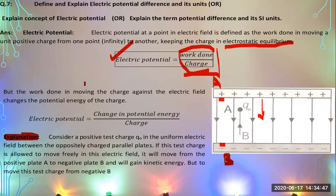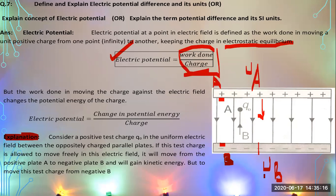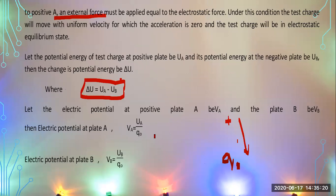Let the potential energy at the positive plate be U_A and at the negative plate be U_B. Then the change in potential energy, ΔU, equals U_A minus U_B. This is the difference of potential energy between the two plates. Let the electric potential at positive plate A be V_A and at plate B be V_B.